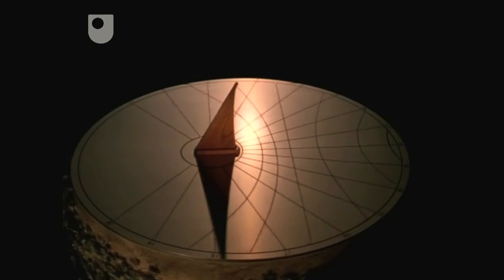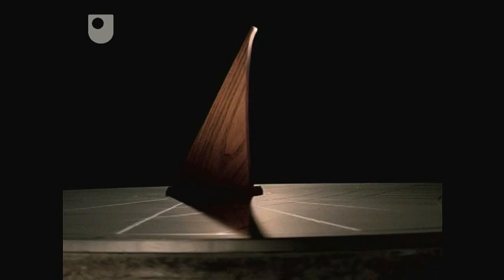On most sundials, the shadow shows only the time of day. The shadow is thrown by the gnomon in the centre of the dial.